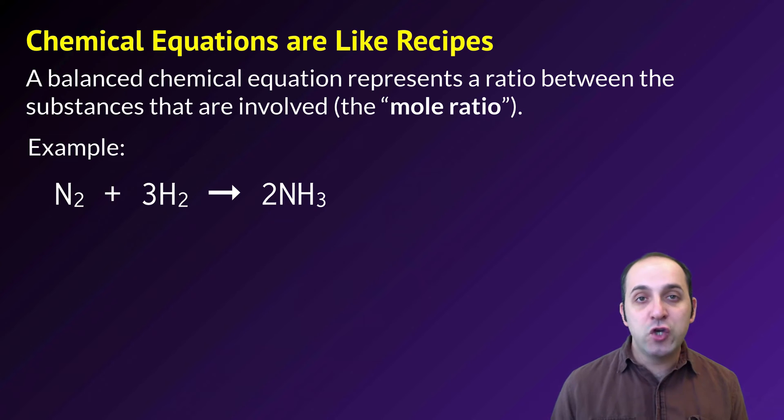So for example, N2 plus 3H2 produces two molecules of NH3 or ammonia. This represents a ratio between these substances. For every molecule of nitrogen I need, I need three molecules of hydrogen and I'll produce two molecules of ammonia.